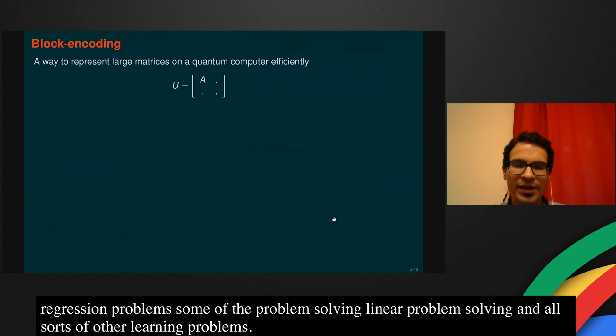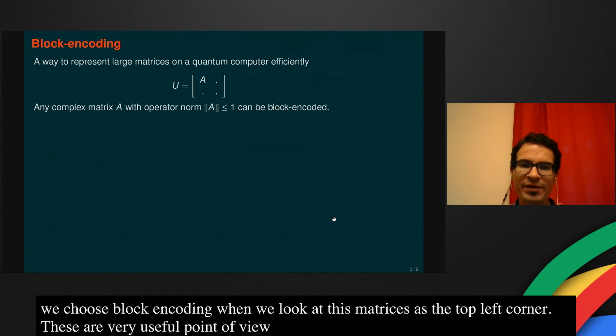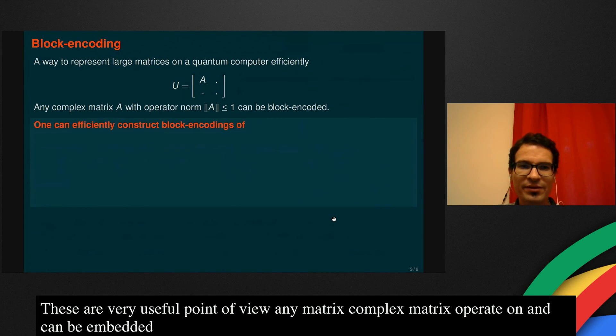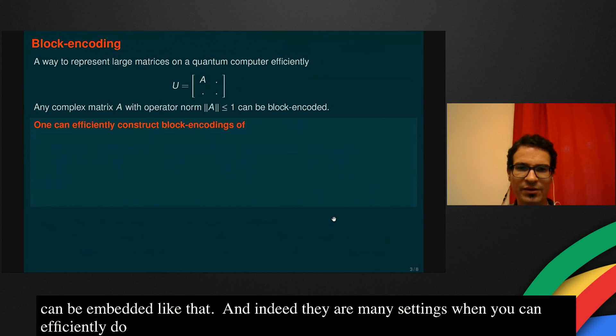It's widely applicable. I would like to turn to a little bit more why we choose this so-called block encoding when we look at these matrices as the top left corner of unitary matrix. This is a very useful point of view because any matrix, any complex matrix with operator norm at most one can in principle be embedded into a unitary matrix like that. And indeed, there are many settings when you can efficiently construct such a circuit.